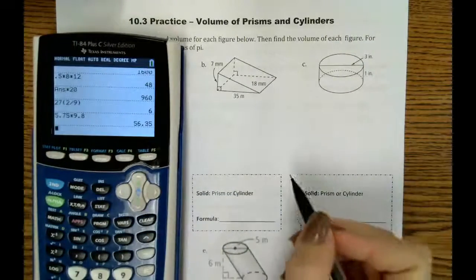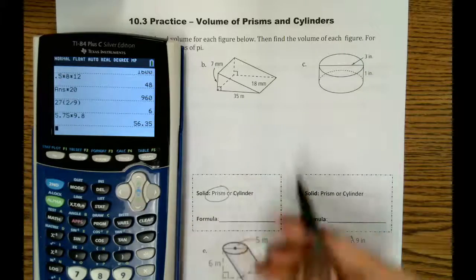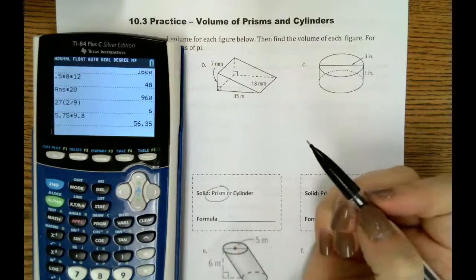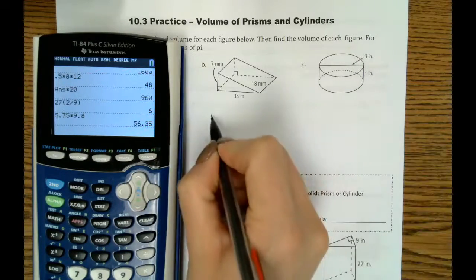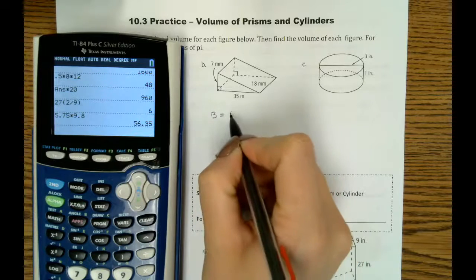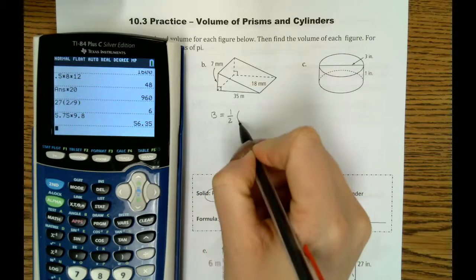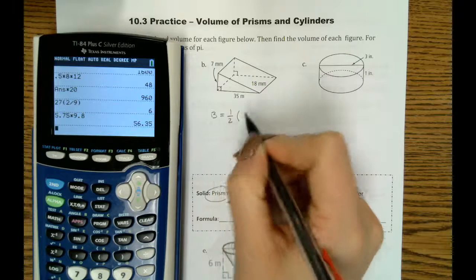Okay, letter B, this is also a prism. However, this is a triangular prism. So when we solve for the area of the base, we're going to do one-half base times height.